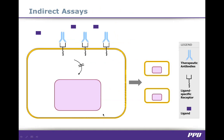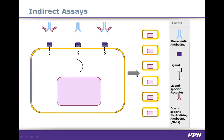Indirect assays are used when the drug product — which is usually a monoclonal antibody or a soluble receptor — works by blocking the binding of a ligand to its specific cell surface receptor. The end result is a reduction or absence of a cellular response. When NABs are present, they bind to the drug product, preventing it from binding to the cellular receptors. As a result, the ligand can bind to its receptor and trigger a specific cellular response, such as cellular proliferation.